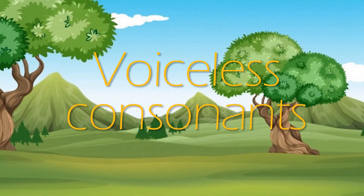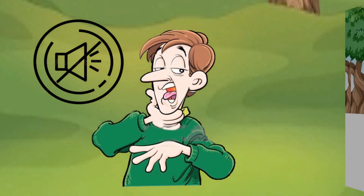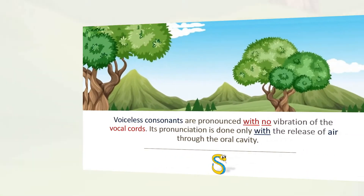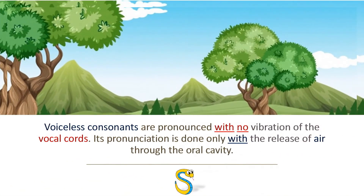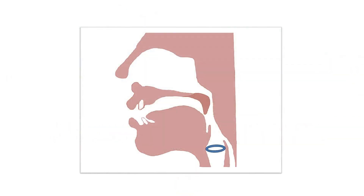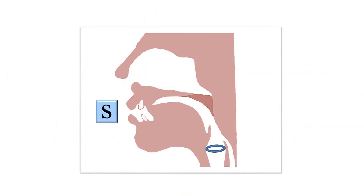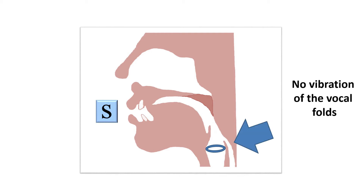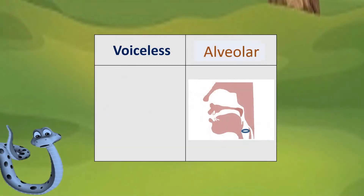Voiceless consonants are pronounced with no vibration of the vocal cords. Their pronunciation is done only with a release of air through the oral cavity. Their sounds vary depending on the position of the lips, tongue, and glottis.